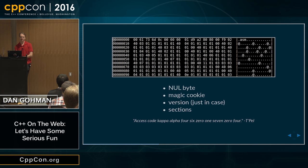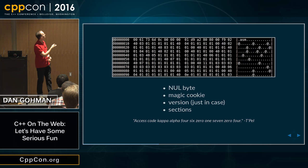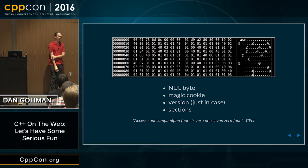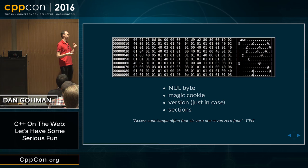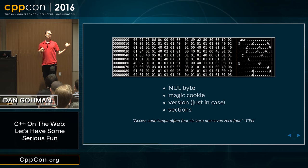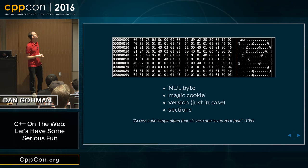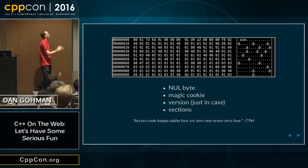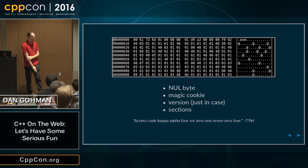I'm not really one for reading hex dumps, but a couple things to point out. The very first byte is a null byte — that's interesting because the null byte is not a valid text character, and in particular not a valid JavaScript source file character. So in a browser context, if you want to know whether you're dealing with JavaScript or WebAssembly, you can read the very first byte: if it's null, it's not JavaScript. The next three bytes are 'asm', which is the magic cookie that says this is a WebAssembly file. And the next four bytes are the little-endian encoded version number.